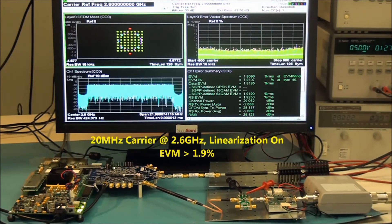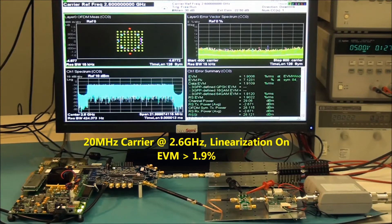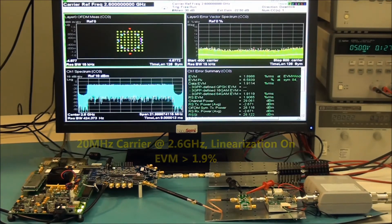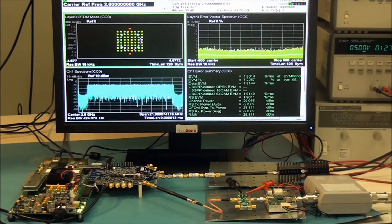While the linearizer is on, data EVM improves from 5.5% to 1.9%.